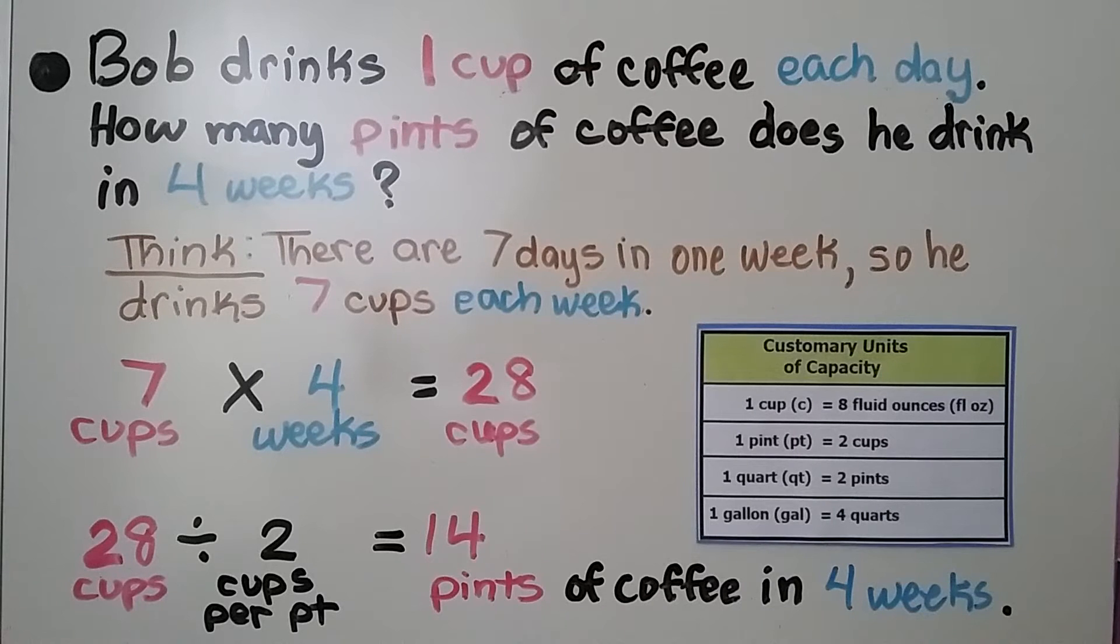Here's an example. Bob drinks one cup of coffee each day. How many pints of coffee does he drink in four weeks? We think, there are seven days in one week, so he drinks seven cups each week.